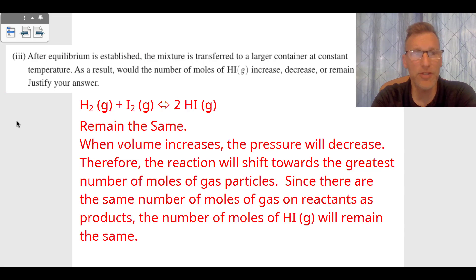And then the last part of this problem is after equilibrium is established, the mixture is transferred to a larger container. This is all about Le Chatelier's again. And what would happen to the moles of HI? They would remain the same. When volume increases, the pressure will decrease. Therefore, the reaction will shift towards the greatest number of moles of gas particles. Since there are the same number of moles of gas on reactants as products, there's two total moles on the left, two total moles on the right, the number of moles of HI will remain the same.